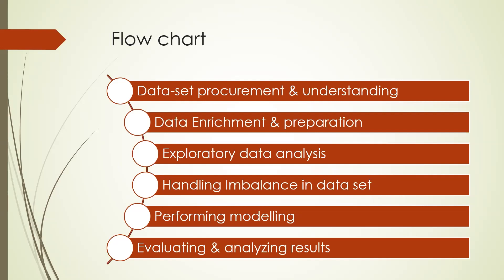Sometimes there is an imbalance in the dataset — we are biased towards one or more classes. Data imbalance in data science is a research area where we need to think about how to handle such datasets. Finally, we perform some modeling — machine learning, deep learning — and then evaluate and analyze the results. This is the flowchart that we are going to cover with the Python example a little bit later.